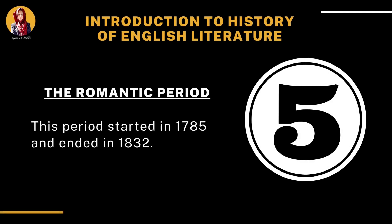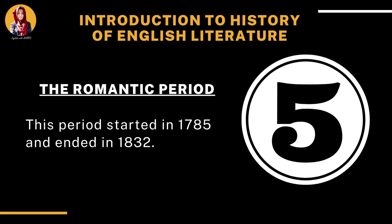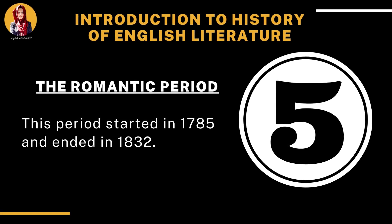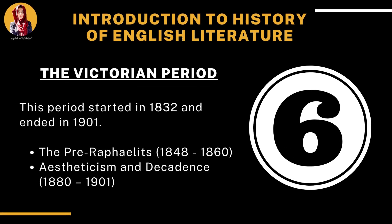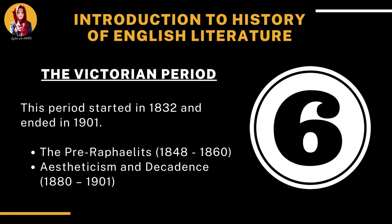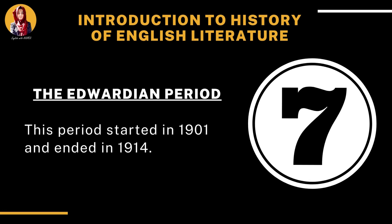The fifth period is called the Romantic period. This period started in 1785 and ended in 1832. The sixth period is called the Victorian period, starting in 1832 and ending in 1901. The Victorian period is further divided into the Pre-Raphaelites, Aestheticism and Decadence.